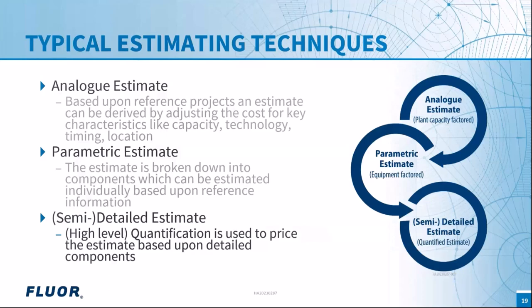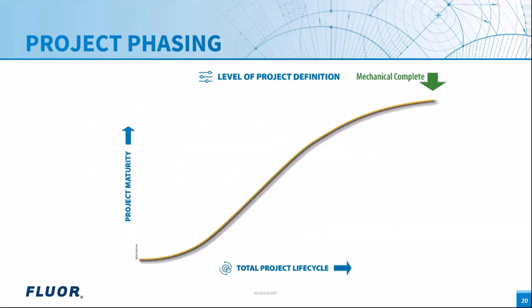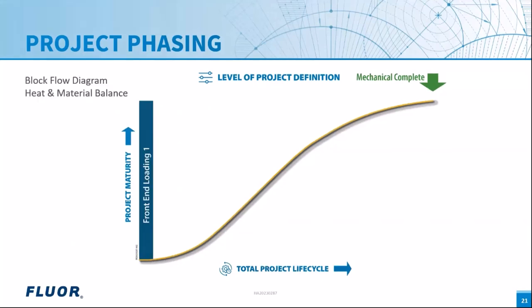These are the traditional techniques. Now we want to examine how we can use them — or whether we need to change them — for new technologies. But first, let's look at the timing of when we apply which technique, by discussing project phasing. The total project life cycle starts at 0% completion and ends at 100%, what we call mechanical completion.